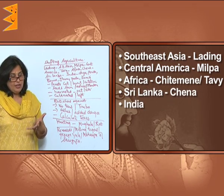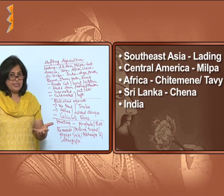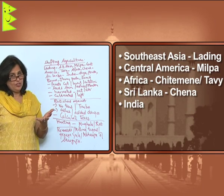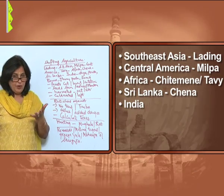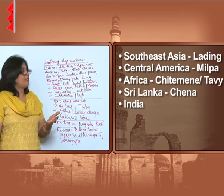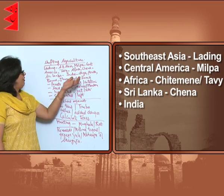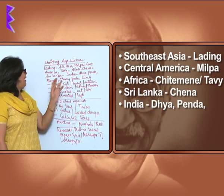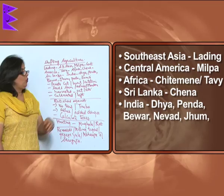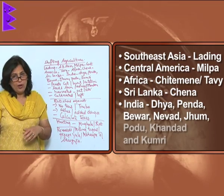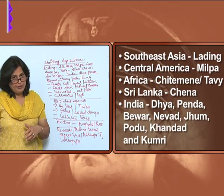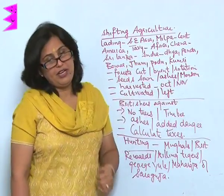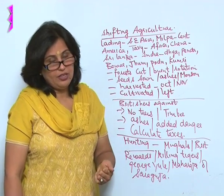In India, shifting agriculture is known by various names in different parts of the country. A few of them are Daya, Penda, Bivar, Jhoom, Poddu, and Kumri.